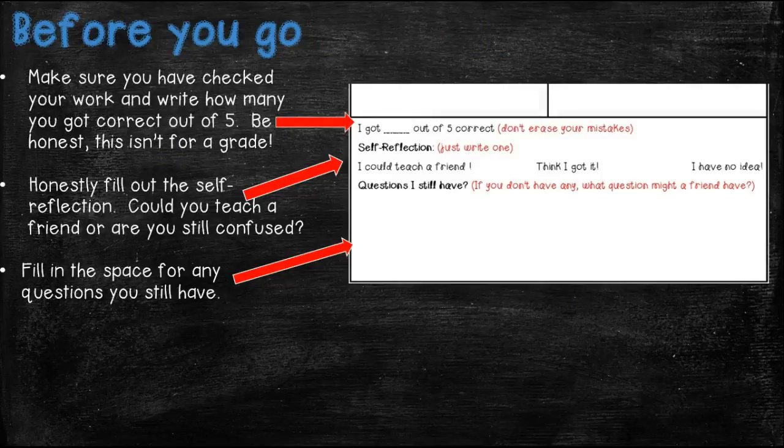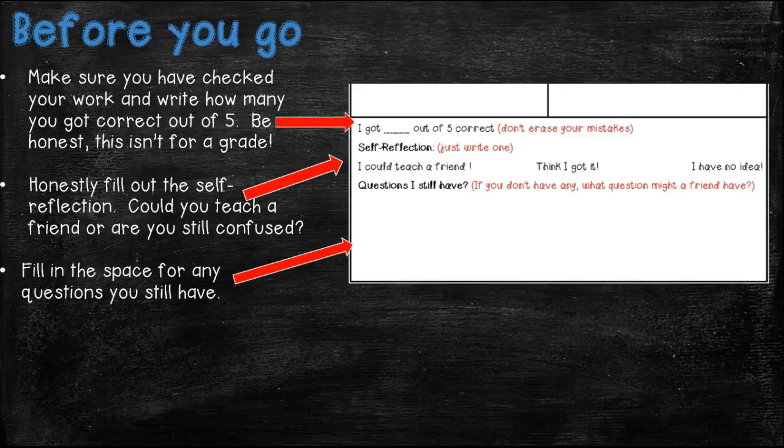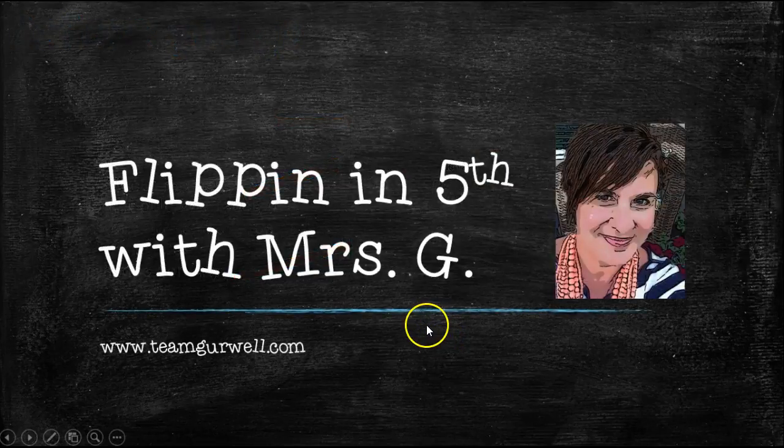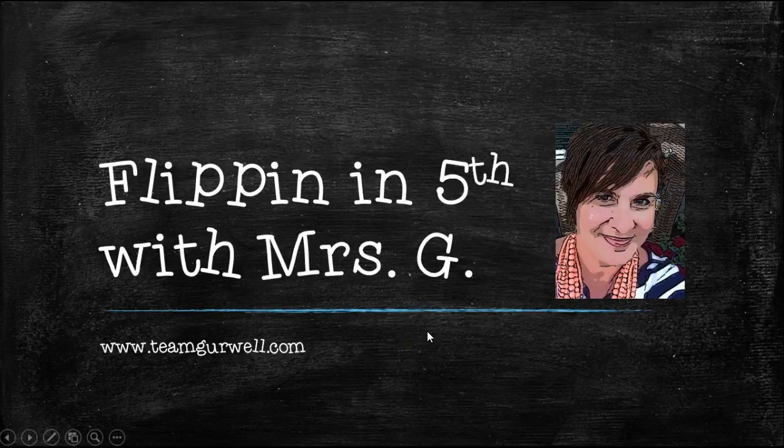So, be sure you've checked your work and you write how many you got correct out of 5. Be honest, this is not for a grade. This can be very confusing for some kids. That's why I want you to go back and re-watch the video if you did not get anything better than, let's say, 4 out of 5 correct. Go back and watch it and really pay attention to what I'm saying, because it's common sense if you actually just sit down and think about it. Honestly, fill out that self-reflection. Could you teach a friend or are you still confused? And fill in the space for any questions you still have. I look forward to practicing multiplication and scaling with you in class coming up, and I hope you have a great night. Bye-bye.